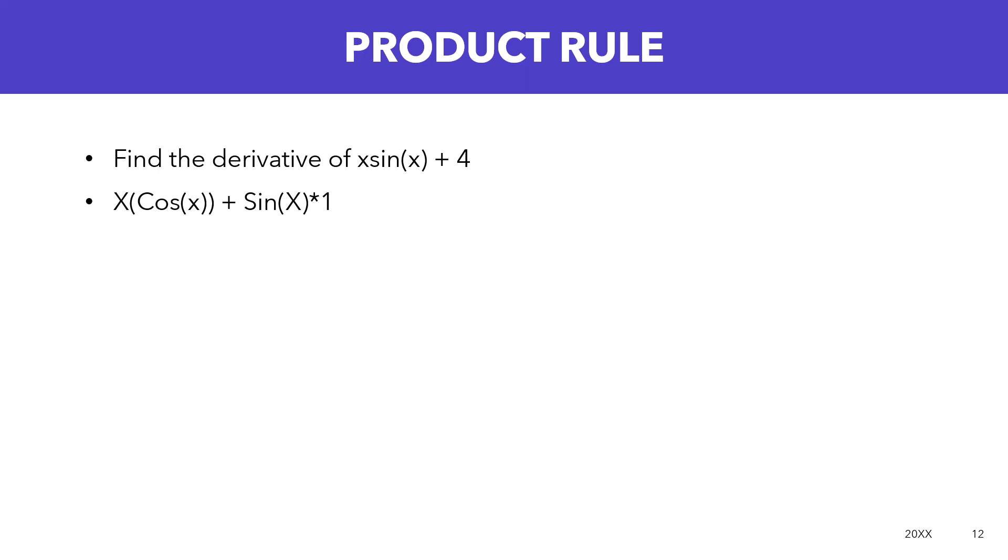For example, find the derivative of x sine x plus 4. We know the derivative of 4 or just a whole number is going to equal zero since it has no variable associated with it. So now we're just looking at x sine x. We want to remember this principle: 1d2 plus 2d1. So 1, which was x, that's the first term, so 1 and 2 are referring to the different terms here. The first term is x, the second term is sine x.